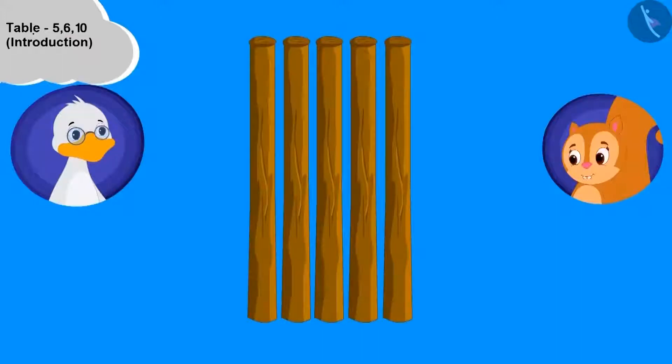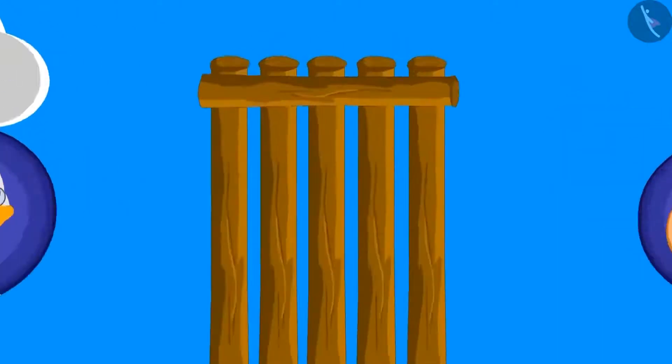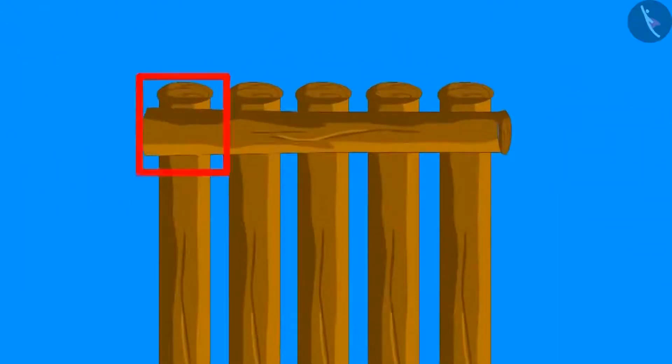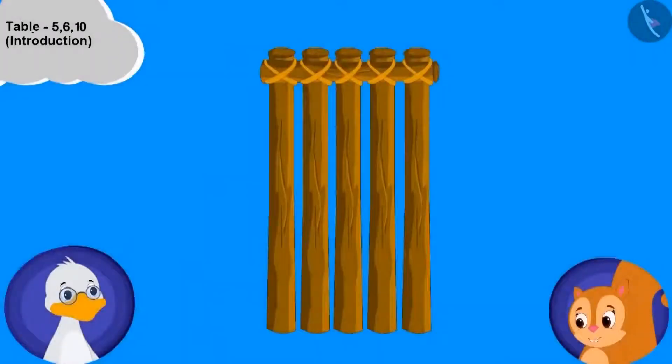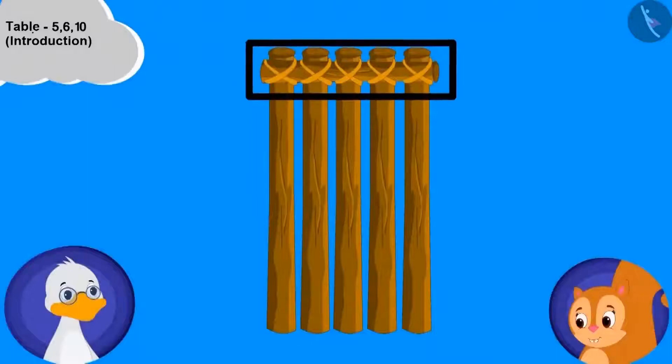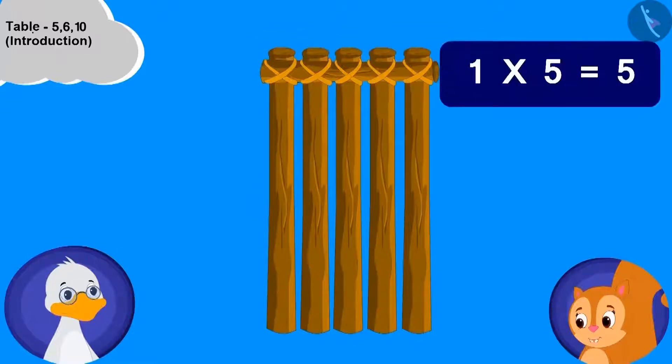Chanda placed 5 wood pieces on the ground like this. Now, we will place one wood horizontally like this. And we will tie a rope at the joints where the horizontal piece cuts the vertical pieces. This is 1 multiplied with 5. Children, can you count the total joints and tell how many these are? 5.